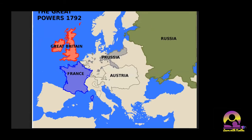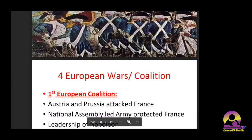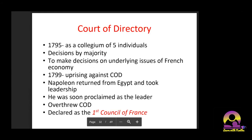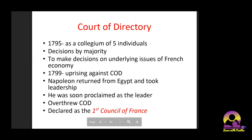Napoleon was emerging as a soldier during this time. Under his leadership, France tried to protect itself, and there was vast public support. The National Assembly under the Third Estate was effectively heading the country, with Louis XVI assassinated and some other king in name only. Napoleon's leadership slowly emerged from the first European coalition. Then we have the Court of Directory — in 1795, a collegium of five individuals was set up.